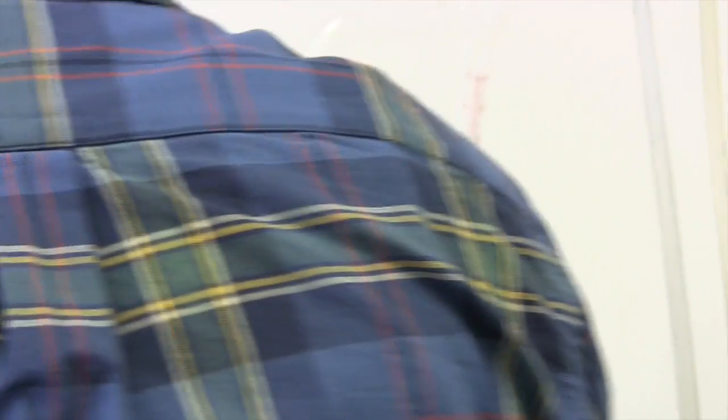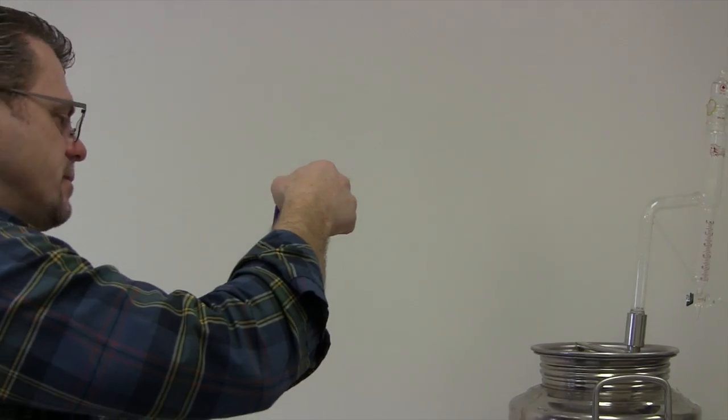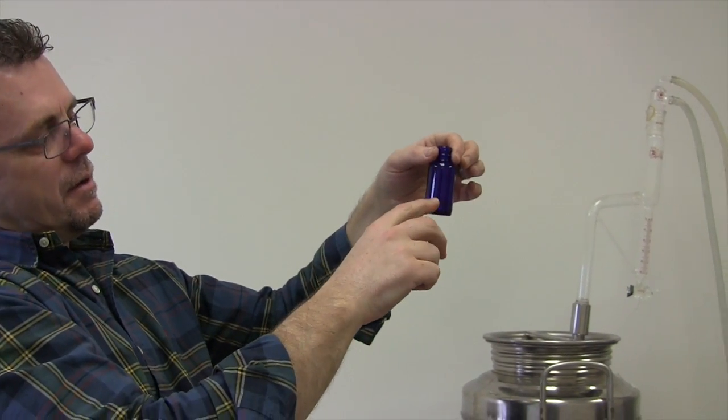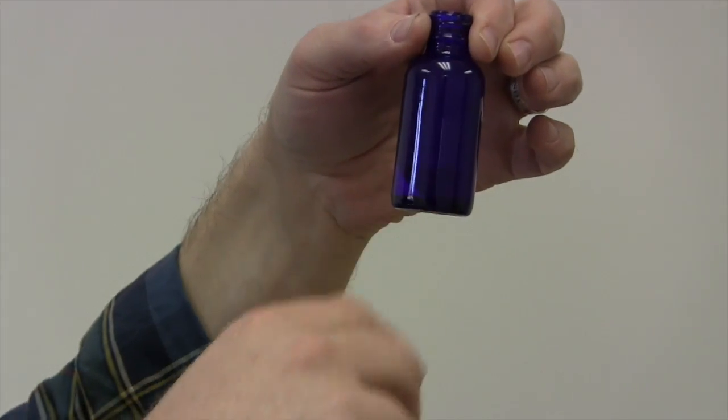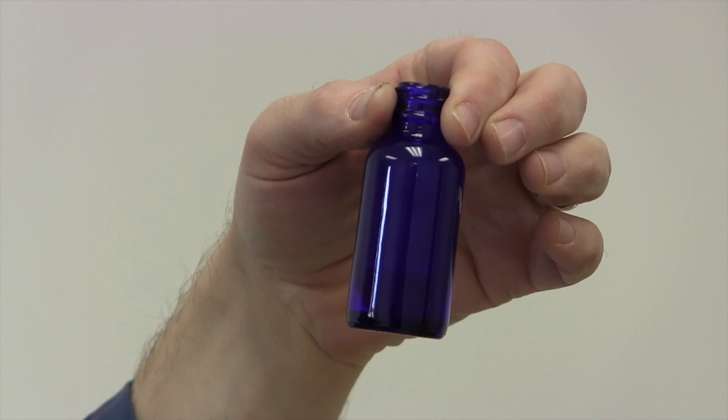So that's basically an ounce of oil so far with a little bit of water. It's not quite an ounce of oil. So we've got, I would say, a good 20 ml, 20 to 25 ml. Probably 25 ml. Yeah, it's the 25 ml trap. That's probably right.